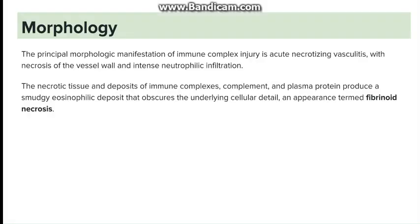Going to the morphology of organs, the major manifestation is vasculitis, which is acute necrotizing in nature. As we can see, neutrophils are infiltrating and necrosis is also seen. The type of necrosis seen here is fibrinoid necrosis, which is mostly associated with immune complex diseases. The appearance on H&E section is a smudgy eosinophilic deposit.